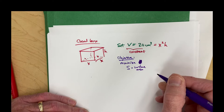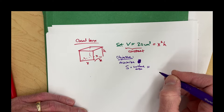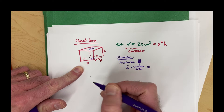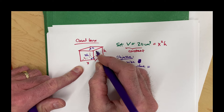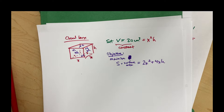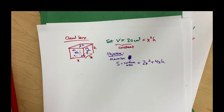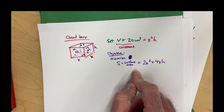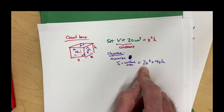The surface area initially has a formula that involves both x and h. The area of the base is x squared, the area of the top is x squared, and the area of each side is x times h. There are four such sides, so the surface area of this box is 2x squared plus 4xh. If the box didn't have a top, that 2x squared would just be x squared — and that will affect the answer. But let's see how this plays out.